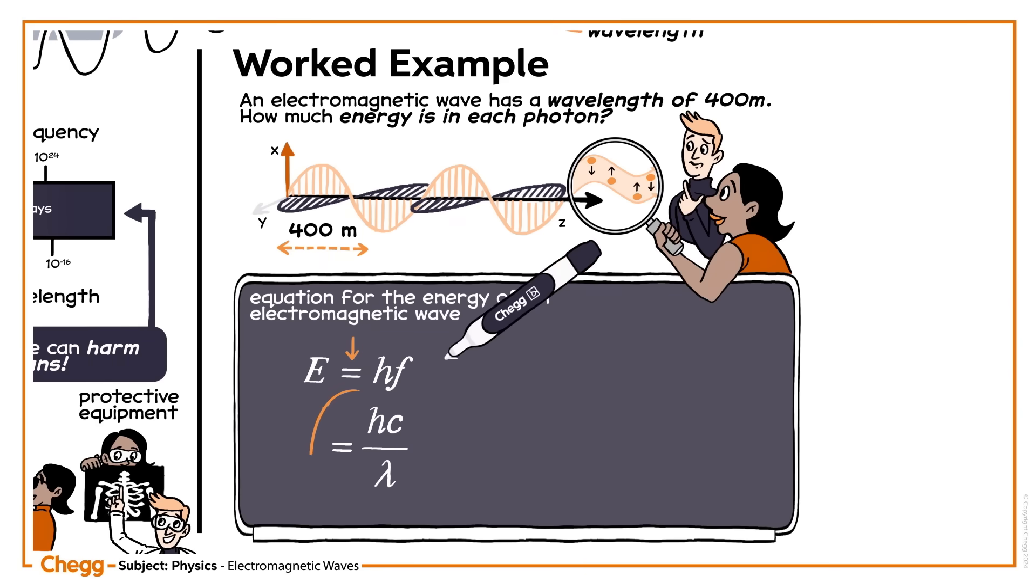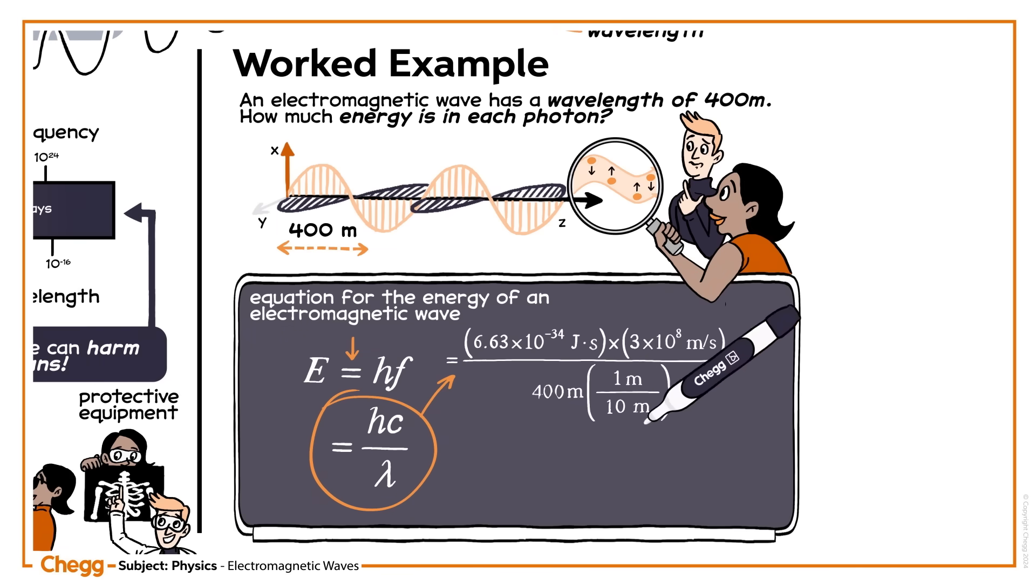Now, fill in the values: Planck's constant, the speed of light, and the wavelength. The value of energy E is 4.97 × 10^-28 joules.